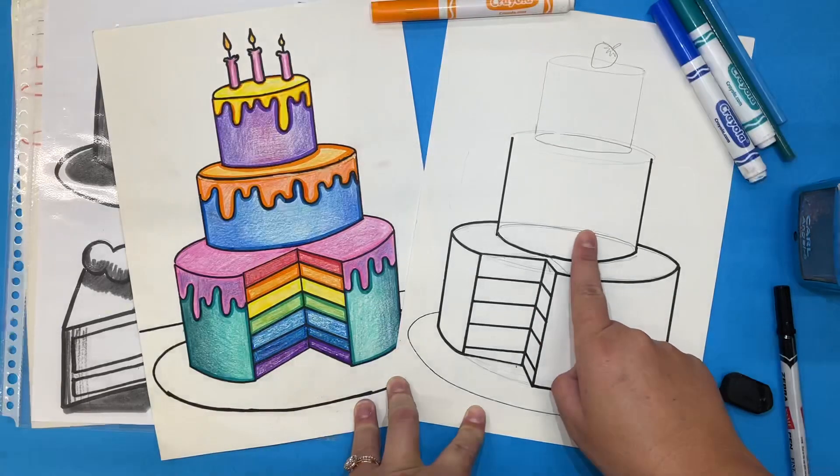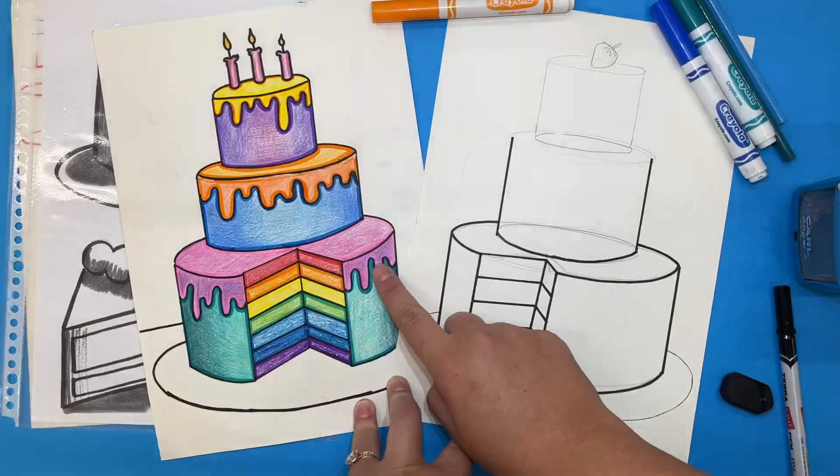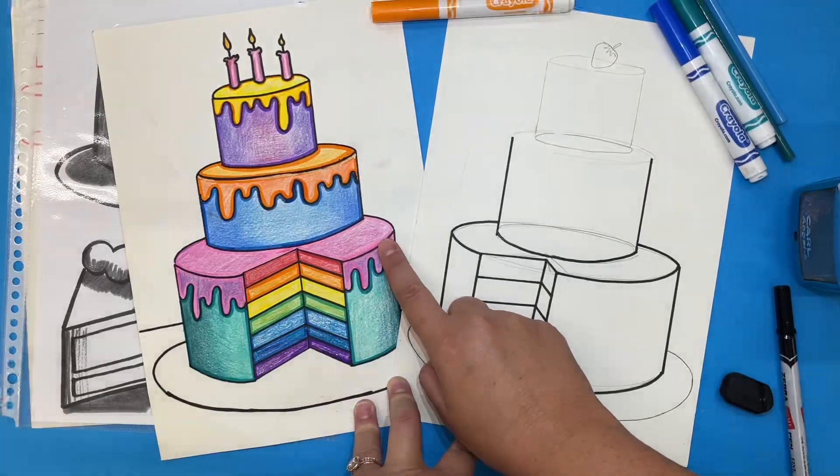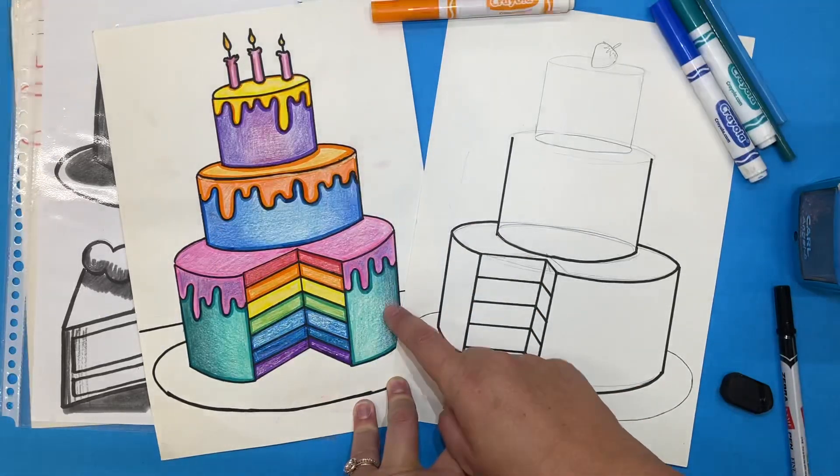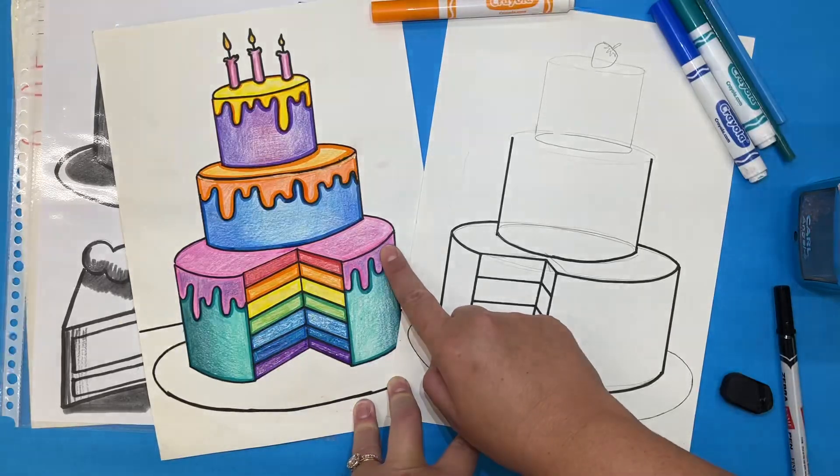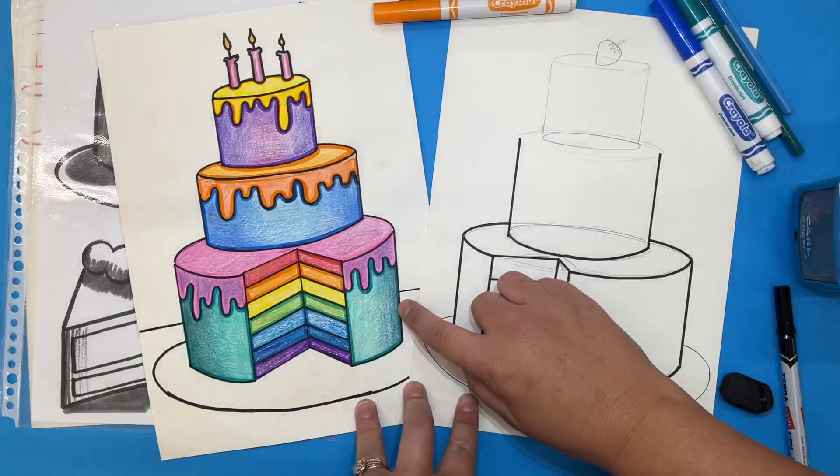Today we are going to start our coloring. Our coloring is extra important because it helps to enhance the illusion that our cake is three-dimensional. The way that we do this is by adding some value. Value is the lightness or darkness of a color.